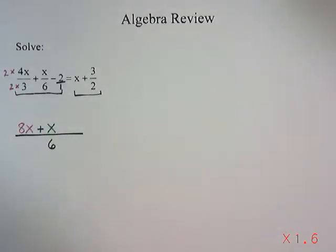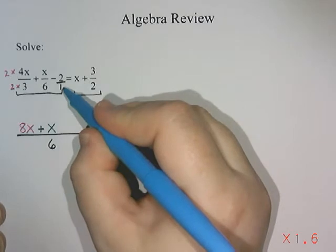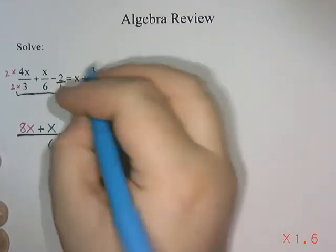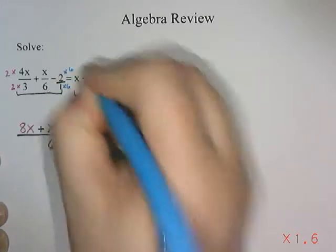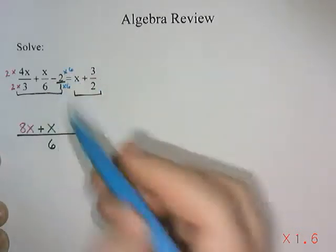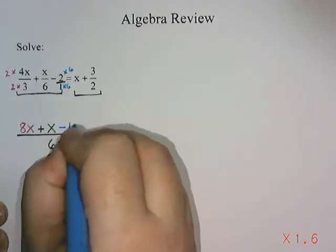And then the last fraction, we had a secret denominator of 1. How do I turn a 1 into a 6? We multiplied it by 6. So negative 2 times 6 is negative 12.